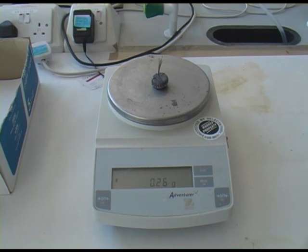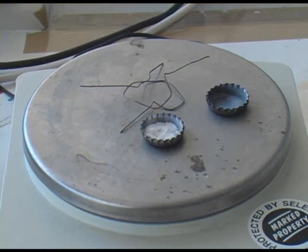If we open the crucible up we can see that instead of our magnesium ribbon we now have a white ashy powder. This is magnesium oxide.